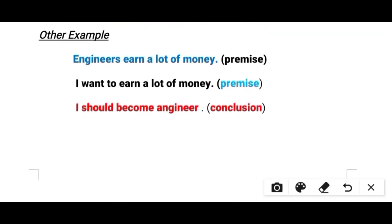Look at other examples. 'Engineers earn a lot of money' — major premise. 'I want to earn a lot of money' — minor premise. 'Therefore I should become an engineer' — conclusion. This argument moves from top to down, meaning from general to specific. We can classify the premises as major and minor premises.